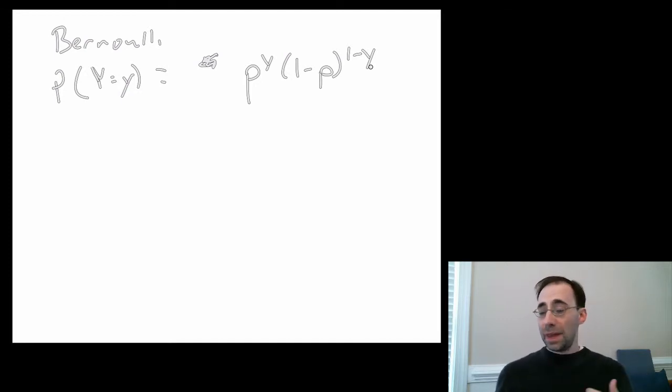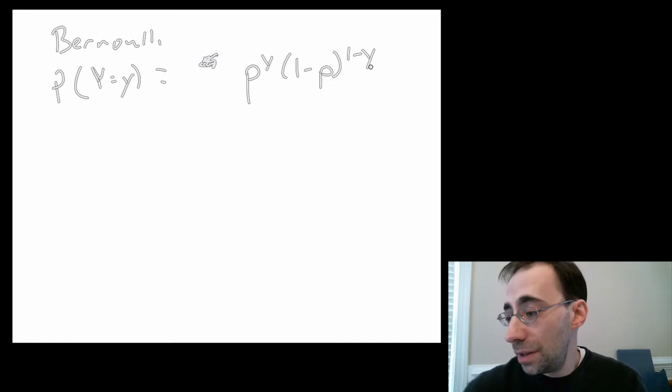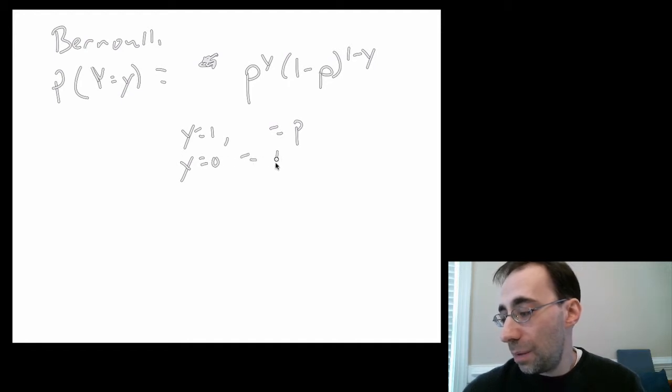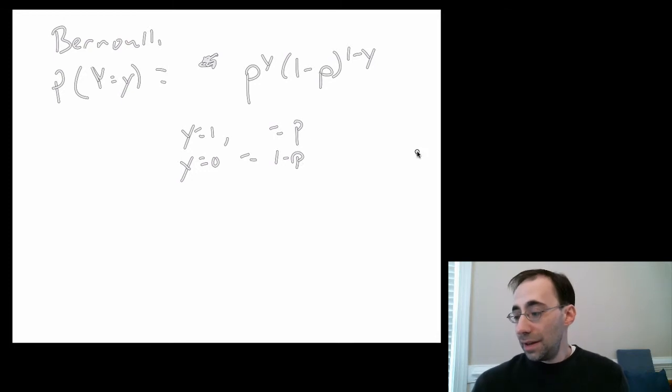You'll see that Bernoulli is really simple. If I put y equals 1 into this equation, then I just get back p. And if I put y equals 0 into this equation, I get back 1 minus p, which is by definition the probability that you don't draw the 1.